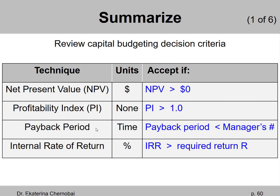The payback period approach instead calculates time — how many years it takes you to get your invested money back. The rule says if the payback period is below the required payback period, something that the manager decided is a reasonable amount of years to wait, then that project should be accepted.